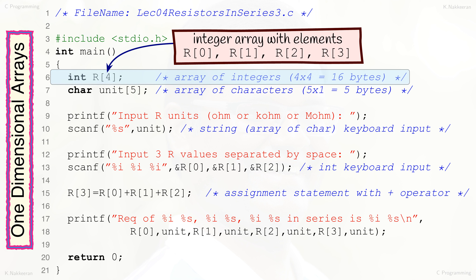Memory addresses of array elements are in sequence with respect to the size of a single element. Hexadecimal numbers are used for representing memory addresses. Adding 4 to the memory address of array element R[0] gives the memory address of R[1]. Similarly, adding 8 to the memory address of R[1] gives the memory address of R[3].